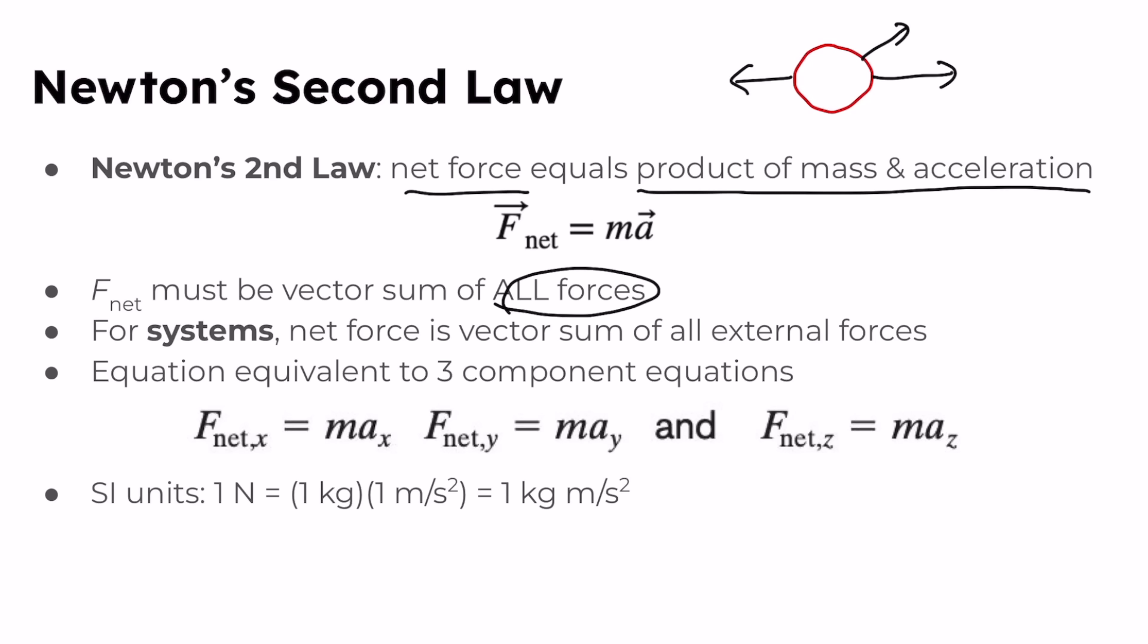For systems, a system is basically just something that consists of one or more bodies. For example, we could have like a railroad engine and a car form a system.